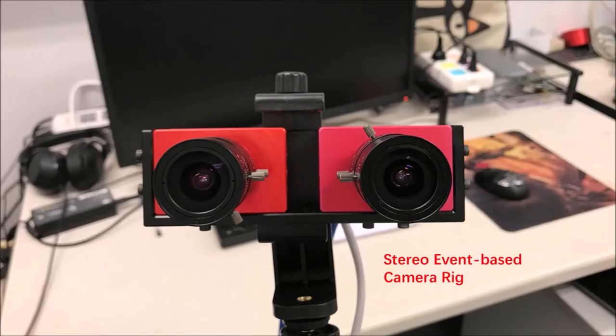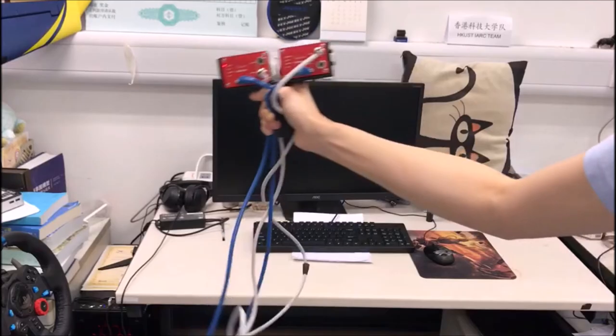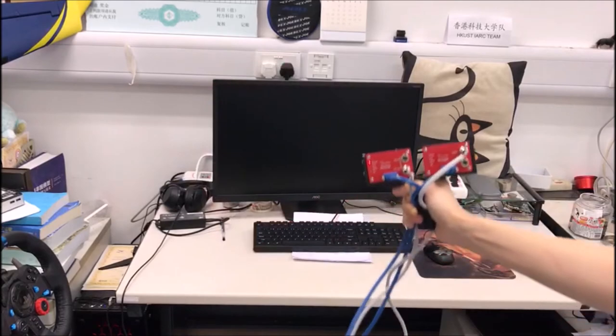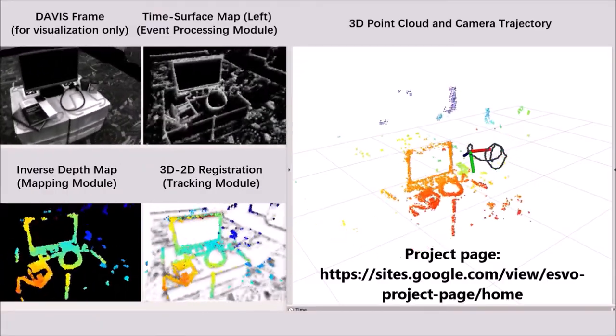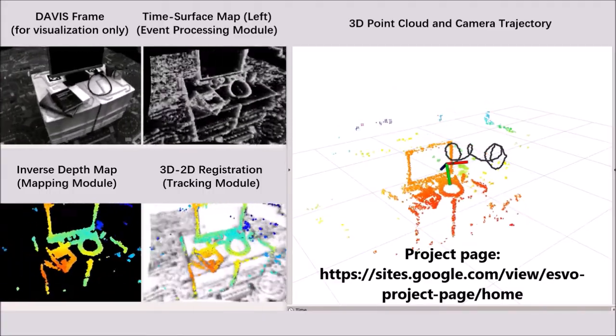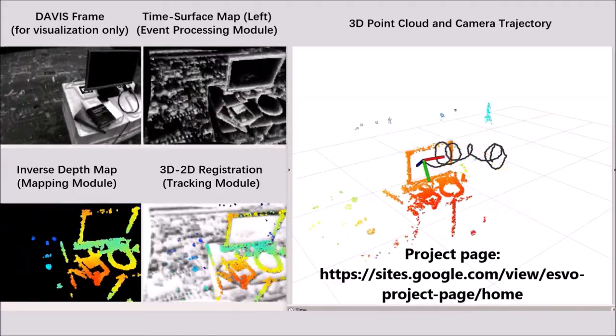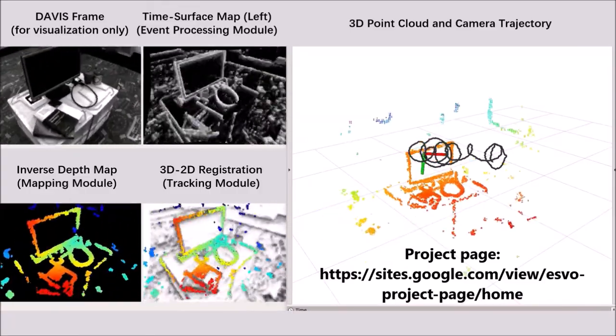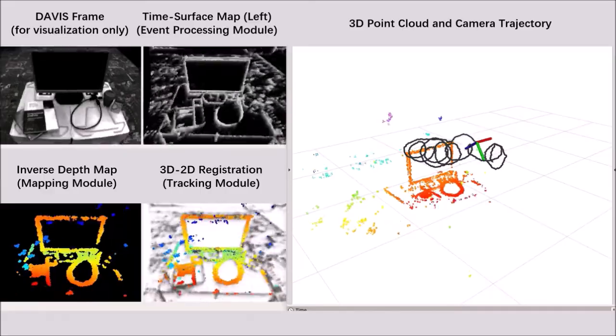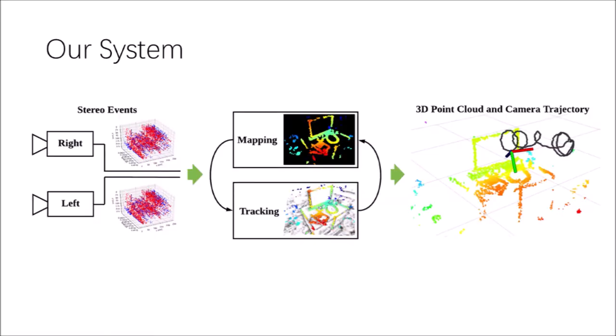In this section, we present our recent work, event-based stereo visual odometry. The proposed system takes as input the asynchronous data acquired by a pair of event cameras in stereo configuration, and recovers the motion of the cameras as well as the semi-dense map of the scene. It exploits spatial temporal consistency of the events across the image planes of the cameras to solve both localization and mapping sub-problems of visual odometry. The system runs in real-time on a standard CPU.